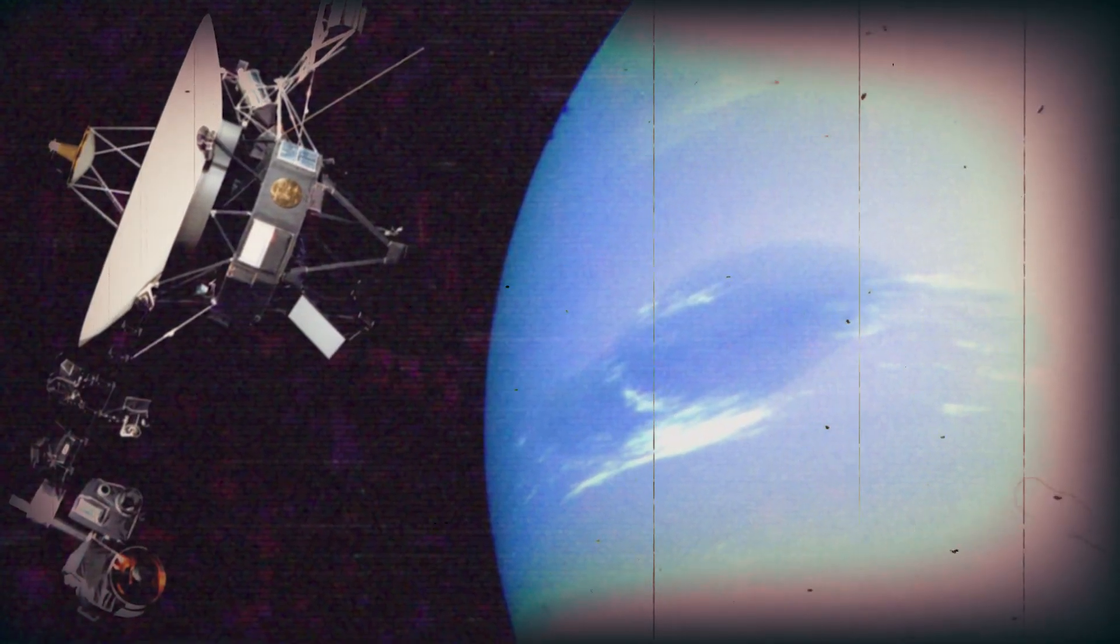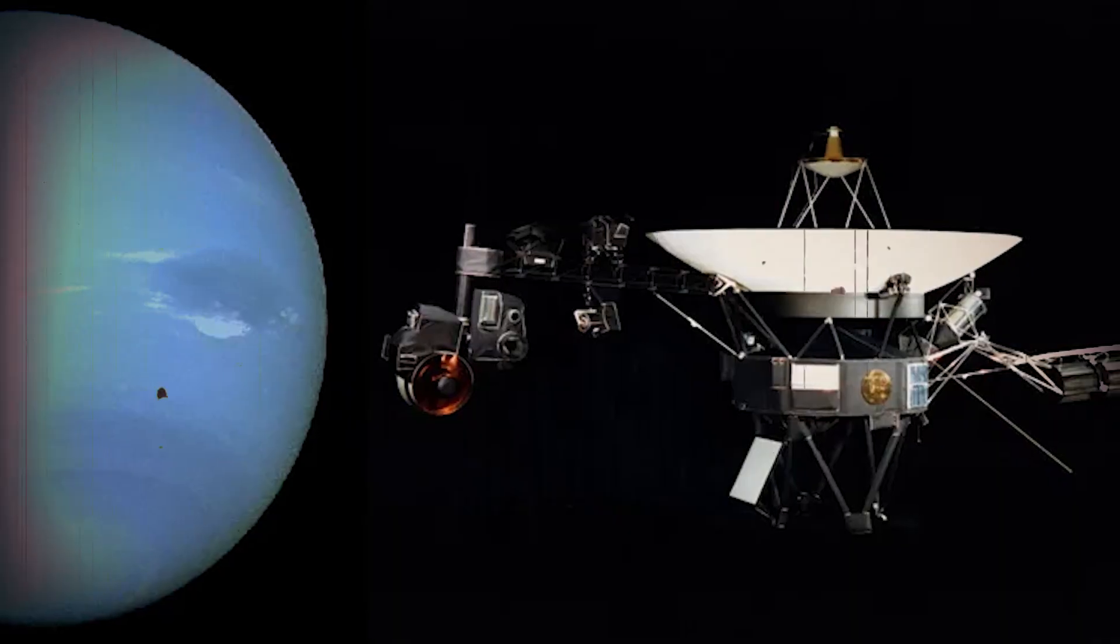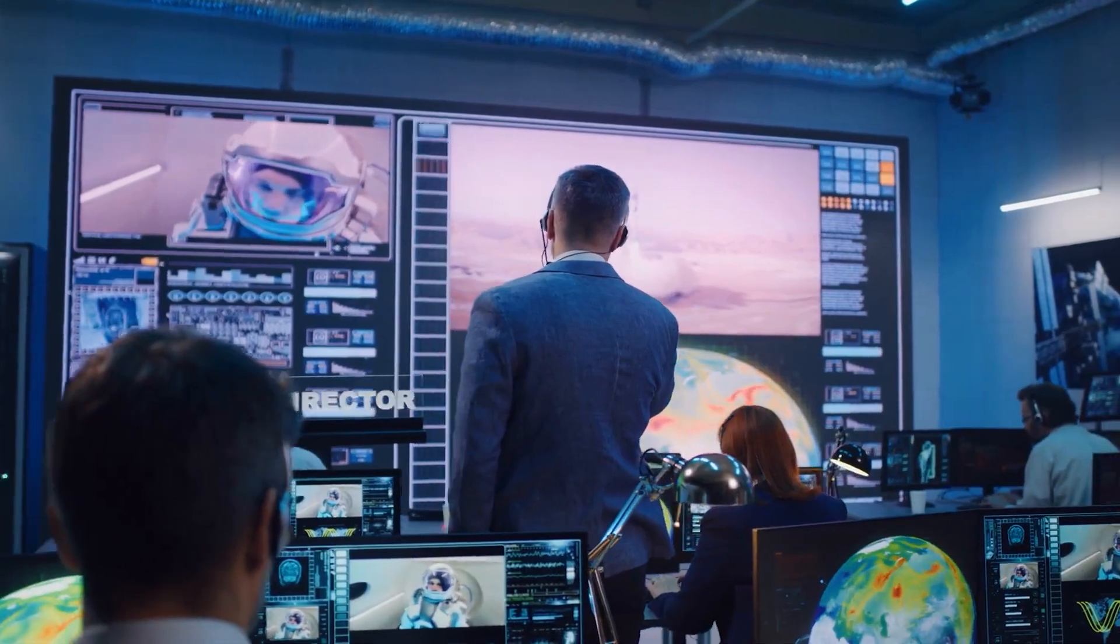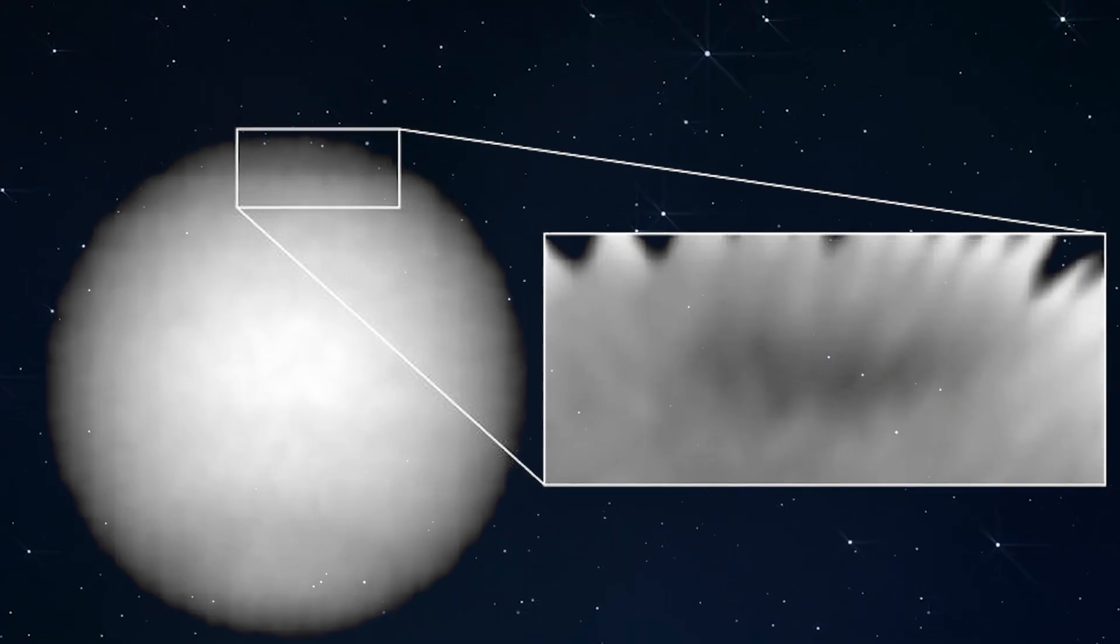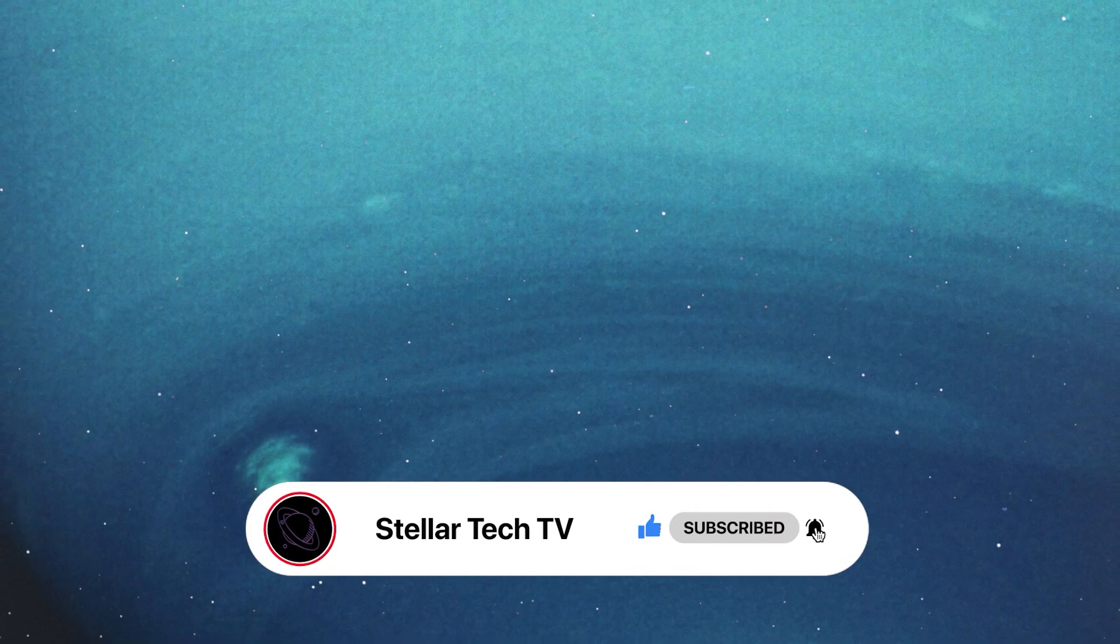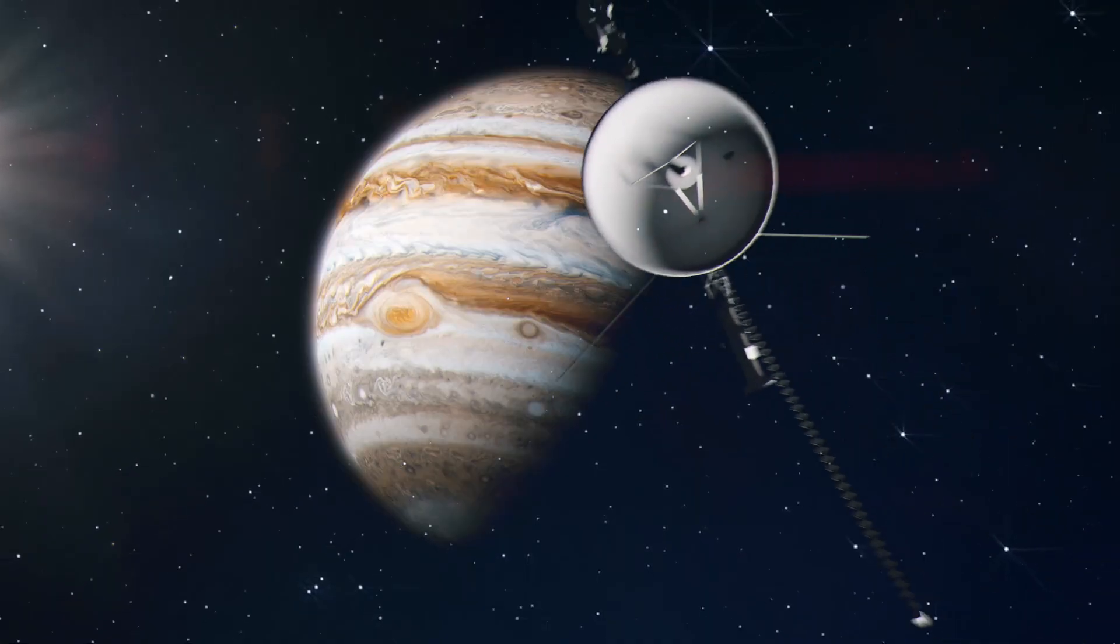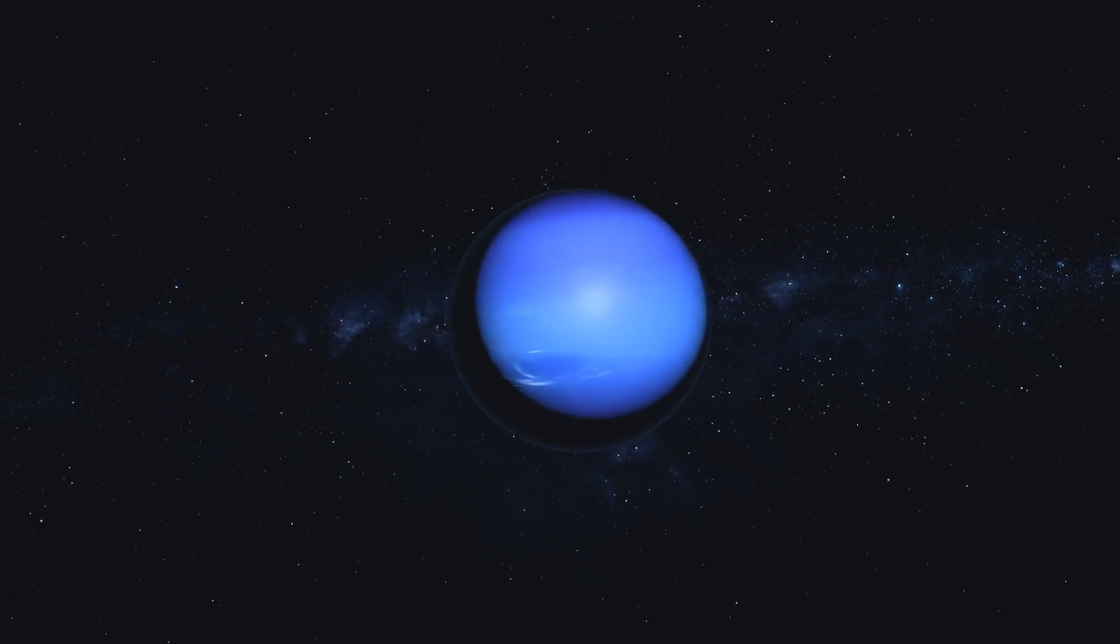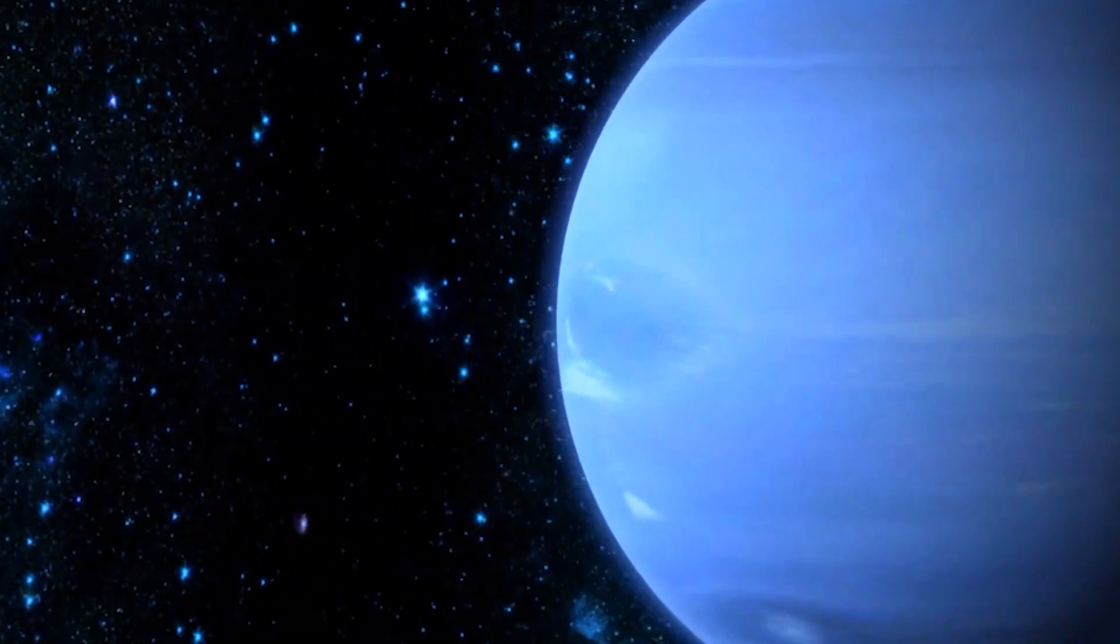First discovered by the Voyager 2 spacecraft in 1989, this colossal cyclone, with dimensions comparable to that of Earth, captivated the imaginations of astronomers. However, its nature proved elusive, for in 1994, the Hubble telescope revealed that the spot had vanished, replaced by a small counterpart in Neptune's northern hemisphere. Unlike Jupiter's enduring 300-year-old cyclone, Neptune's grand-scale vortices are ephemeral, existing for a mere span of two to six years.